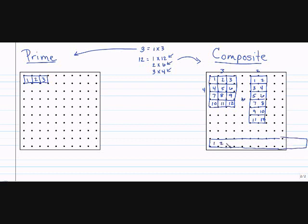This is counting to 12, which would be a 1 by 12. I have three different pictures. It's composite. When I have one picture, it's prime.